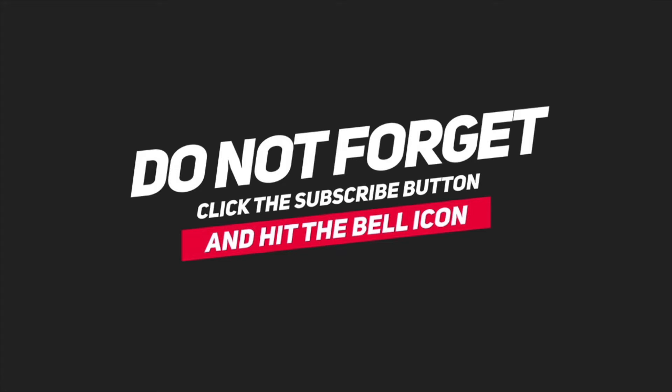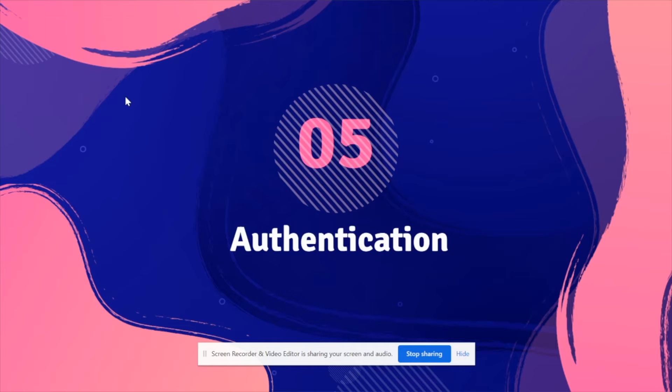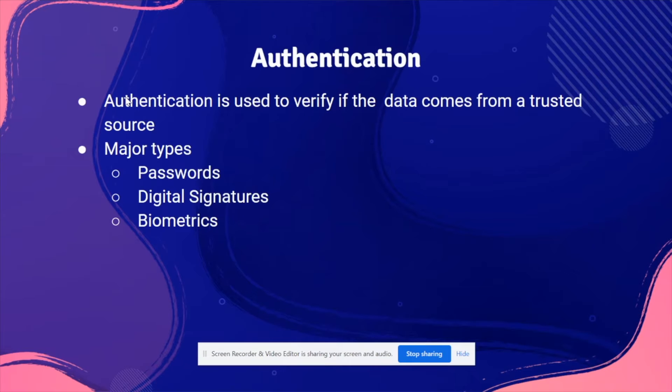Hello guys and welcome to part three of IGCSE Computer Science Chapter 8: Security and Ethics. Authentication is used to verify if data comes from a trusted source — to check if the data has come from a reputable or trusted source.